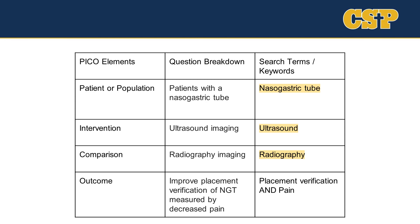When searching our PICO questions in a database, we're going to focus on the P, I, and C elements of our PICO. This is because, typically, your outcome will be aligned with those P, I, and C elements. So if we're looking up patients with Nasogastric tubes and specifically ultrasound and radiography, we can assume they're usually talking about placement. We're also hoping that pain is what their measurement is, but this might actually require us to look over the article to determine whether it fits our parameters for this PICO question.